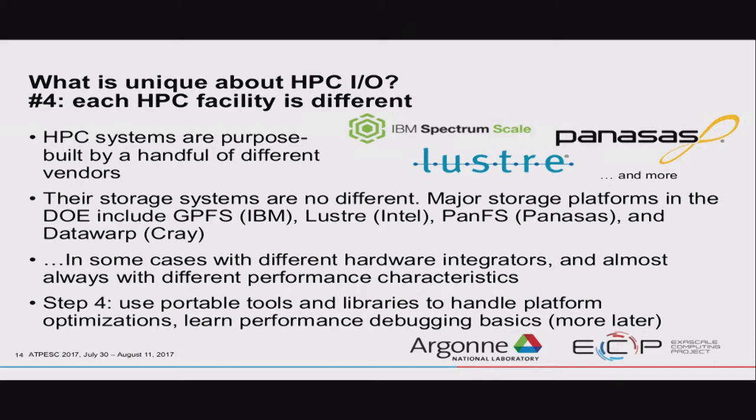The fourth thing: some of the technologies we'll talk about are going to be a little different at each site. The highest-performance computers are essentially custom-built machines by a few vendors, and their storage systems are no different. When it's time to buy a storage system, there are different vendors — IBM, Intel, Panasas, and Cray are some of the biggest. Even once you've chosen a storage system, there may be different hardware behind it. The main point is that hyper-tuning your application for one particular site doesn't necessarily mean it will work great at another. The way to combat that is to learn debugging tools and use standard libraries that work across these storage systems.